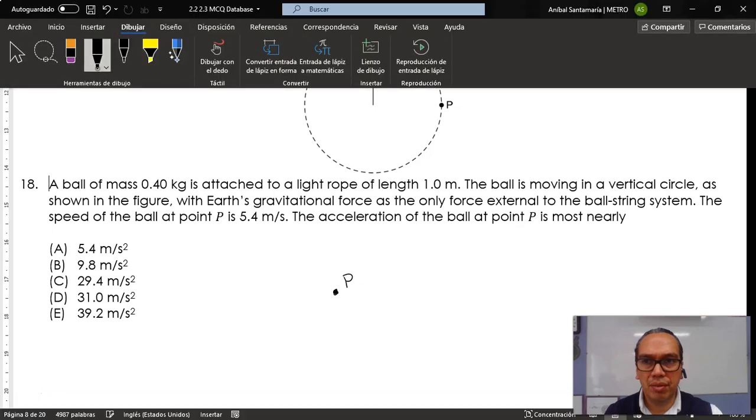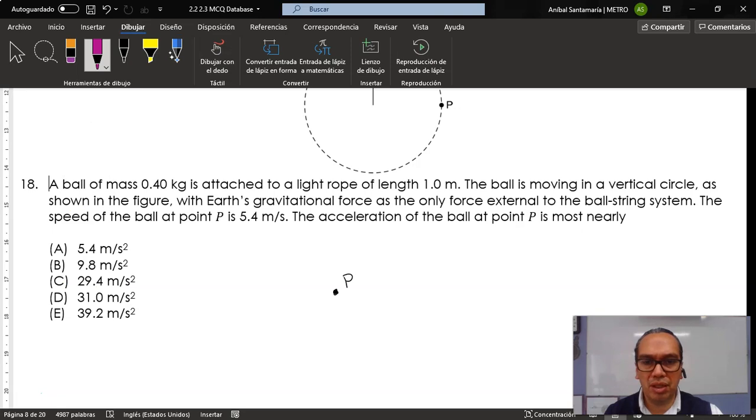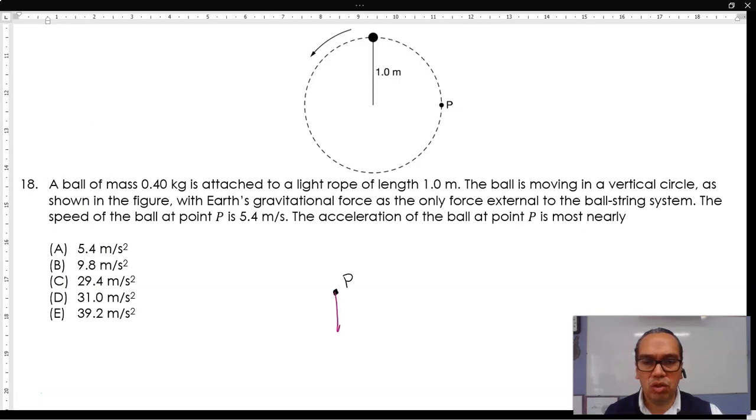then the tangential component of the acceleration is supposed to go this way. Even if the object is moving in a counterclockwise direction, remember that this object has an acceleration that, in a rectangular frame, would be minus g j m per second squared.